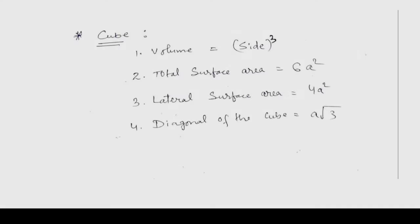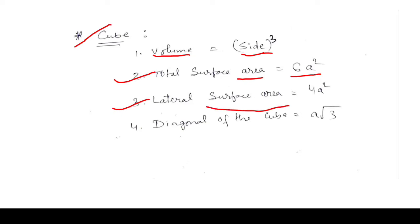Now the formulas for a cube: Volume = side³, or side × side × side. Total surface area = 6a², where a is the side. Lateral surface area = 4a². Diagonal of a cube = a√3.